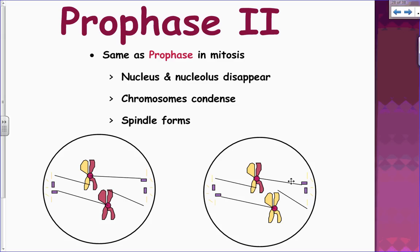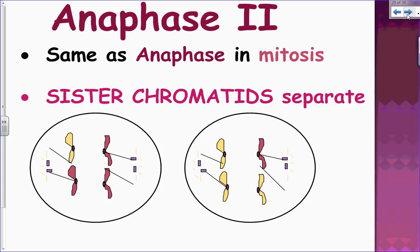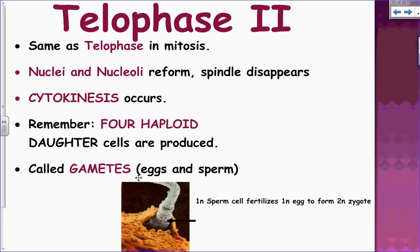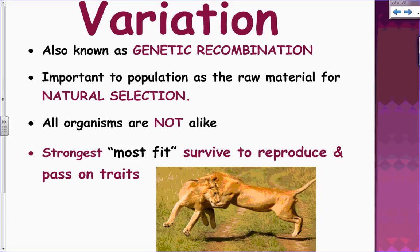In meiosis two, prophase two is the same as prophase in mitosis: the nucleus and nucleolus disappear, chromosomes condense, and the spindle forms. In metaphase two, chromosomes line up. In anaphase two, the sister chromatids separate. In telophase two — same as telophase in mitosis — we now have four haploid daughter cells called gametes, which will eventually mature into eggs and sperm.